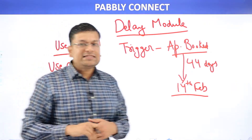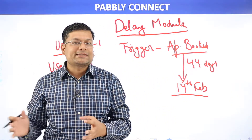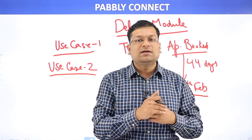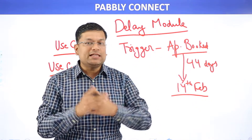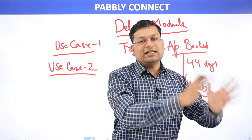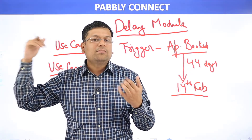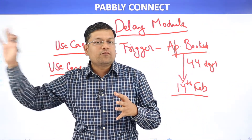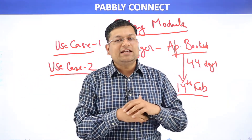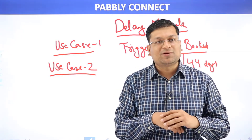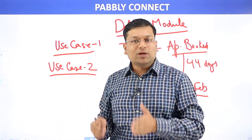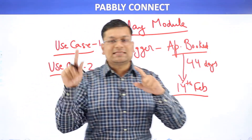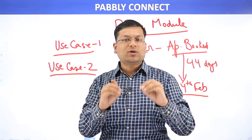The second use case is when you want to delay a certain step for a particular number of days. Imagine someone joins an email list — say you're using Mailchimp and you've got a lead from Facebook Lead Ads. As soon as that lead is generated, you want to put a delay of seven days before you send an SMS reminder to that person. Instead of a date-based delay, you specify a duration.